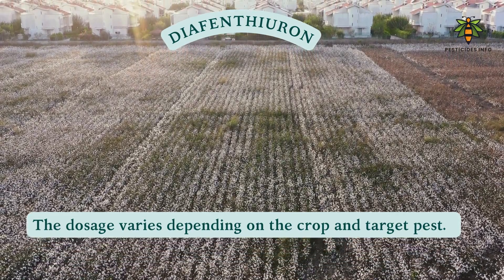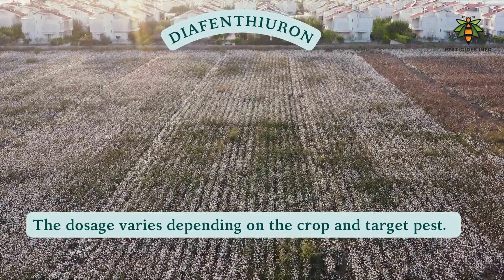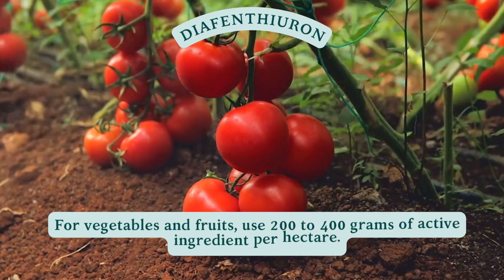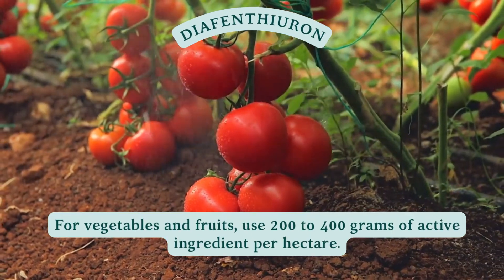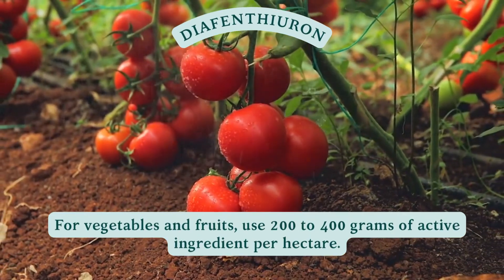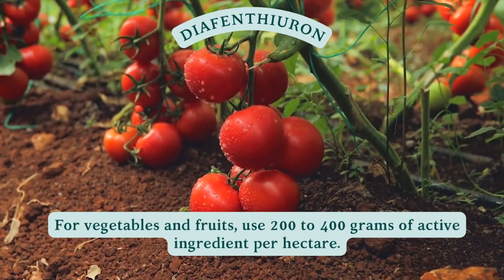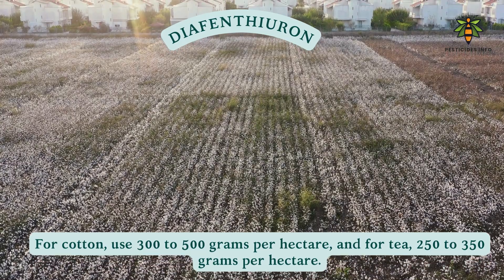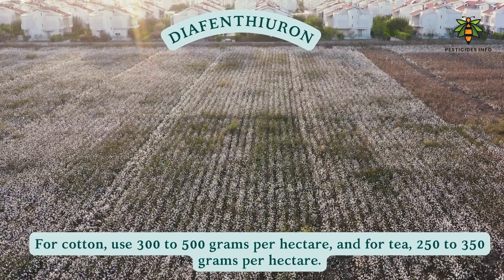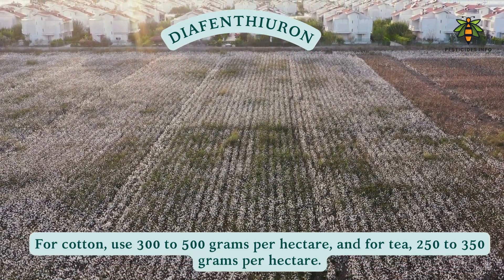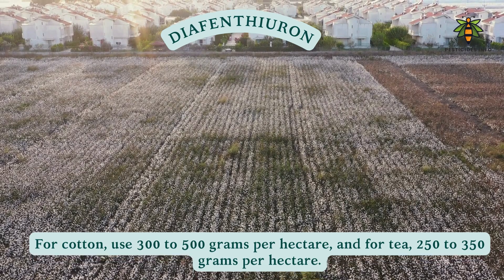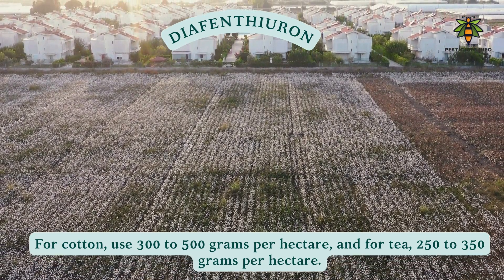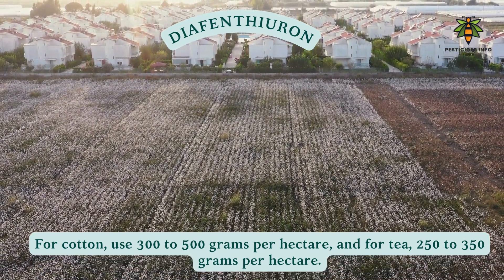The dosage varies depending on the crop and target pest. For vegetables and fruits, use 200 to 400 grams of active ingredient per hectare. For cotton, use 300 to 500 grams per hectare, and for tea, 250 to 350 grams per hectare.